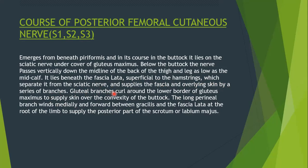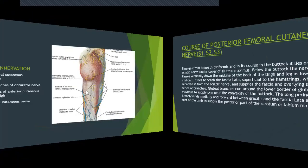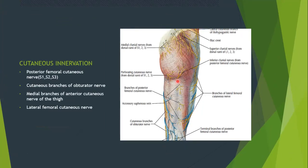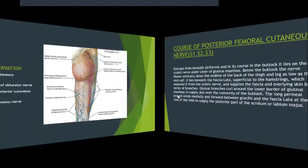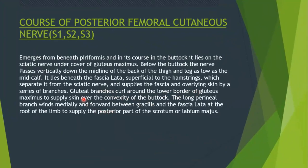The nerve supplies the fascia and overlying skin by a series of branches. It gives gluteal branches — other texts refer to these as the inferior cluneal nerves. These cut over the lower boundary of gluteus maximus to supply the skin over the lower convexity of the buttock. It also gives a long perineal branch which winds medially and forward between gracilis and fascia lata at the root of the limb to supply the posterior part of the scrotum in males and labium majus in females.